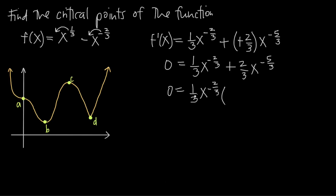What do we multiply by 1/3 x to the negative 2/3 to get 1/3 x to the negative 2/3? Just 1. Then we pulled out a 1/3, which leaves us with a positive 2 — we multiply 1/3 by 2 to get 2/3. And to get from x to the negative 2/3 to x to the negative 5/3, we multiply by x to the negative 1. Now we've got the right-hand side factored.